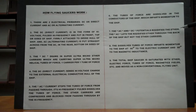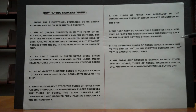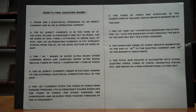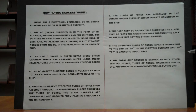Number seven: the AC and DC potentials rigidify the ether. The AC lets the rigidified ether through the back of the ship, but it does not let the ether carriers through the back of the ship. Number eight: the dissolved tubes of force impart momentum to the ship at 90 degrees to the electric current and 90 degrees to the magnetic inductance. Number nine: the total ship saucer is saturated with ether, electric force, tubes of force, magnetic field, etc., and moves as a non-conventional flying unit.